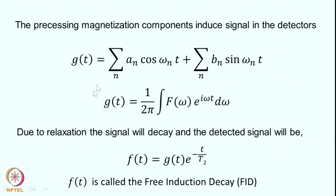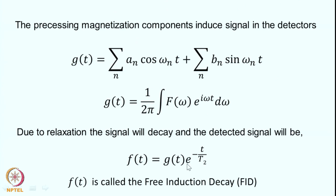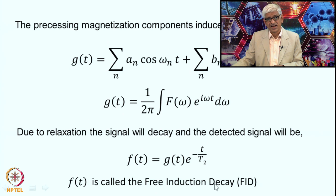We must also account for relaxation: the transverse components decay with relaxation time T2. So we multiply G(t) by e^(−t/T2), giving f(t) = G(t) × e^(−t/T2). This is called the Free Induction Decay — 'free' because it results from free precession with no perturbation, 'induction' because rotating magnetization induces voltage in the detectors, and 'decay' because the signal decays due to transverse relaxation.